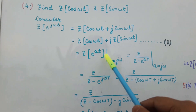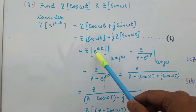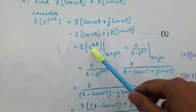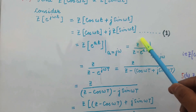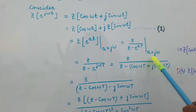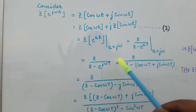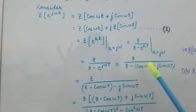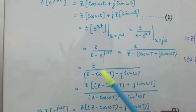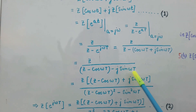Since we have already found the Z transform of e^(at), we can write the Z transform of e^(jωt) by substituting a = jω. We found that the Z transform of e^(at) is Z / (Z - e^(aT)), so substituting a = jω, this comes out to be Z / (Z - e^(jωT)). Now, e^(jωT) can be written as cos(ωT) + j·sin(ωT), so the denominator becomes Z - cos(ωT) - j·sin(ωT).